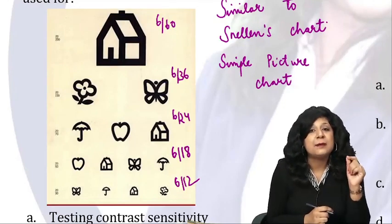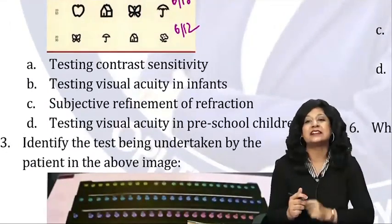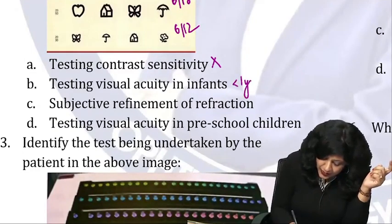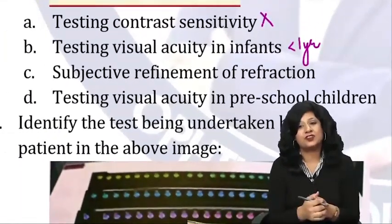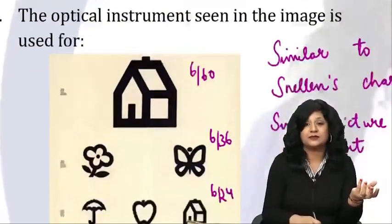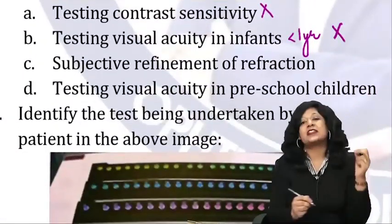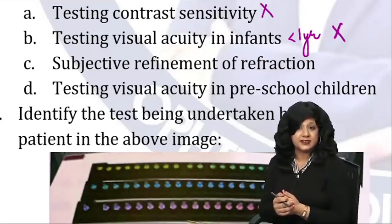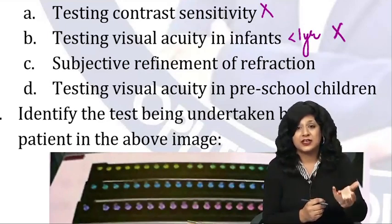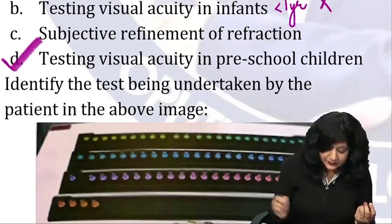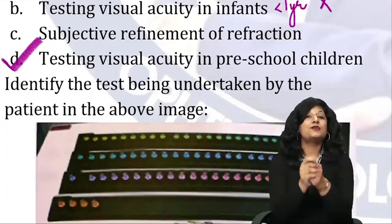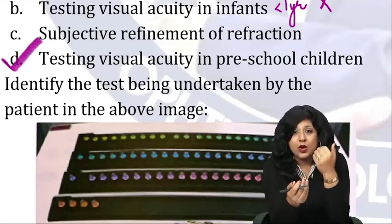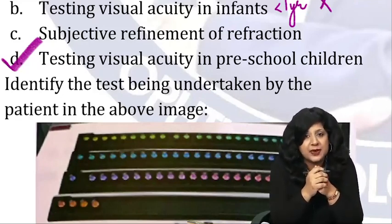So what is the simple picture chart used for? Options include contrast sensitivity — no. Testing visual acuity in infants — infants are less than one year, and they won't be able to name a flower, house, or butterfly. Subjective refinement of refraction uses Jackson cross cylinders, so we're not using this. The simple picture chart is used for testing visual acuity in pre-school children — toddlers too small to read letters, who can't help you with the E-chart or Landolt C chart.